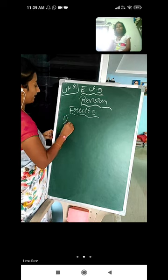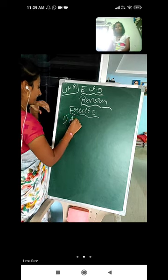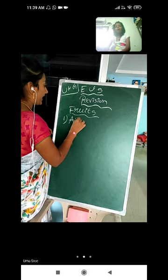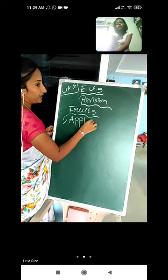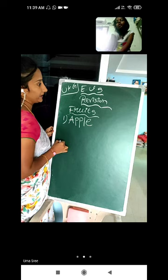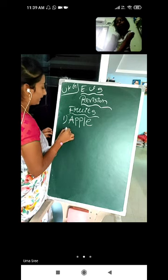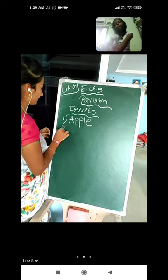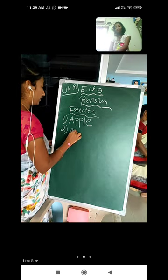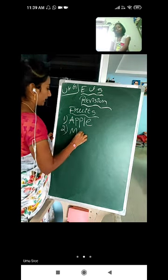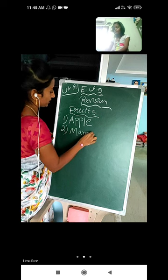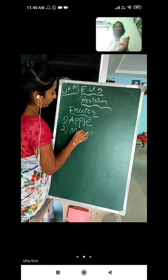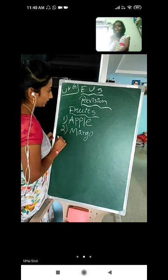First one is Apple — A, P, P, L, E. Second one is Mango — M, A, N, G, O.